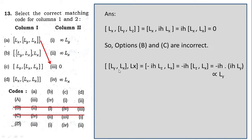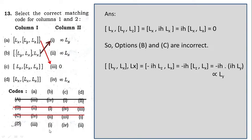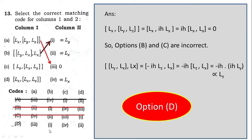Checking the second entry with a similar calculation, you get a result proportional to L_y, so B connects with 1. In option A, B connects with 4 — incorrect. In option D, B connects with 1 — correct. So option D is the right answer.